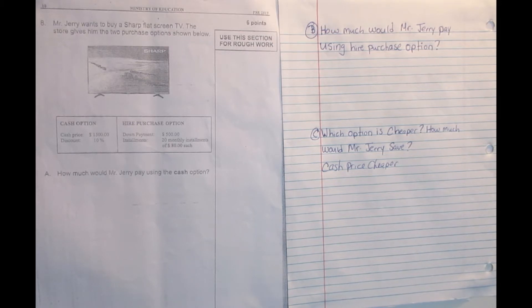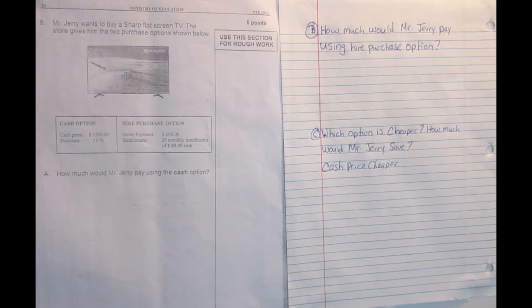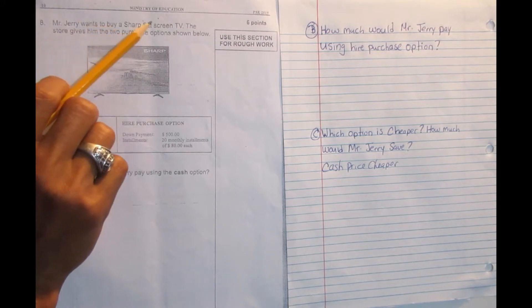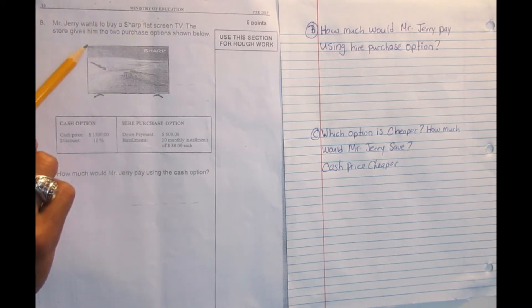With no further delay, remember you can subscribe for quick access to all the videos and lessons that will be posted. At this time we want to go into information based on a problem. It says Mr. Jerry wants to buy a sharp flat screen TV. The store gives him two purchase options shown below.